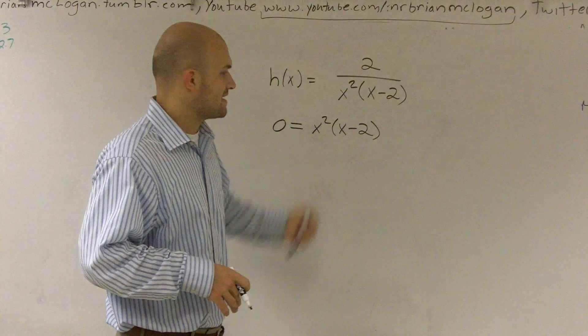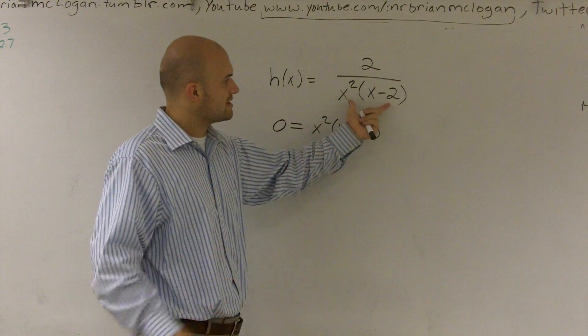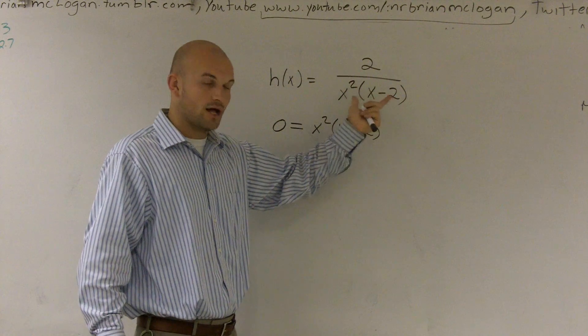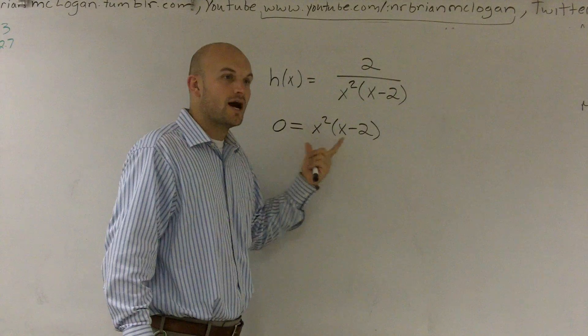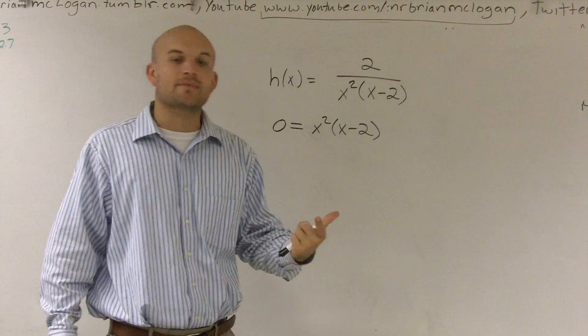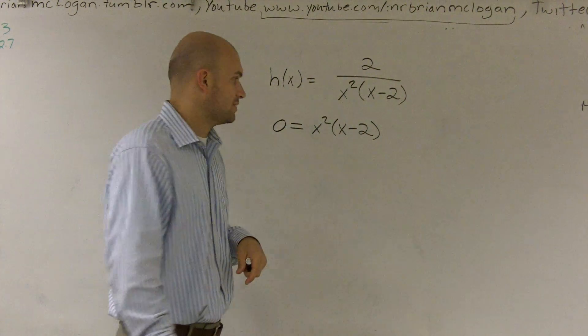So therefore, if I set my polynomial on the denominator equal to 0, I'll find which values make my denominator 0, therefore giving me my vertical asymptotes.